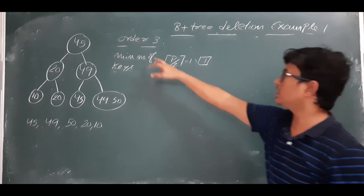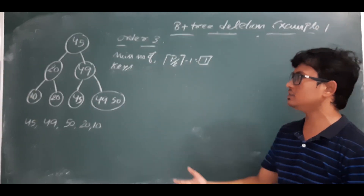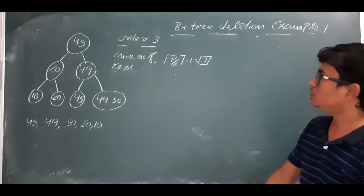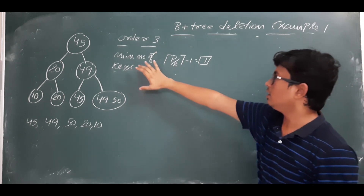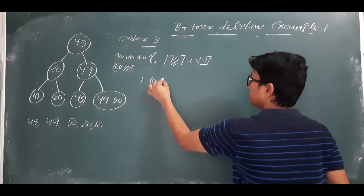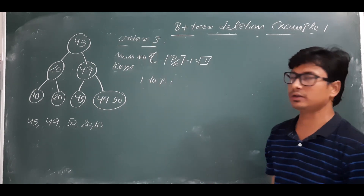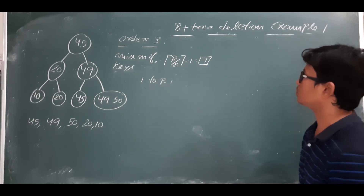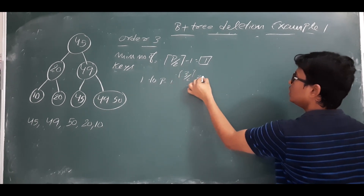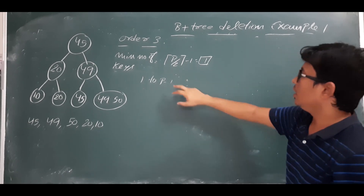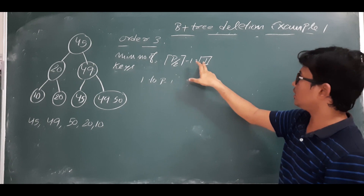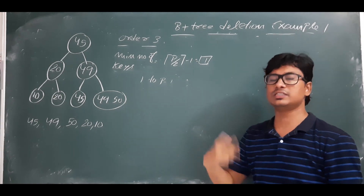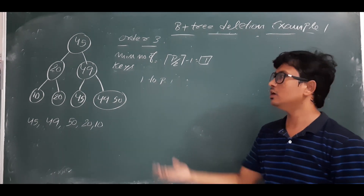The given order is equal to 3. Order = 3 means the internal node order is 3 and the leaf node also has order 3. If the order is 3, the root will consist of 1 to p−1 keys where p is the order. For non-leaf nodes, the minimum number of keys is ⌈p/2⌉ − 1, which is ⌈3/2⌉ − 1 = 2 − 1 = 1. So the root node and leaf nodes should have a minimum of one element.